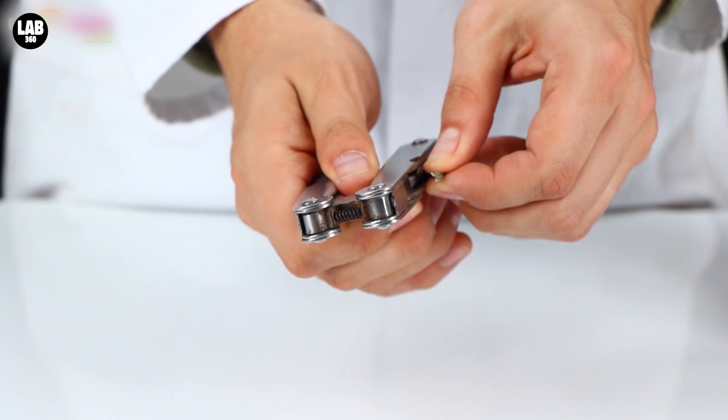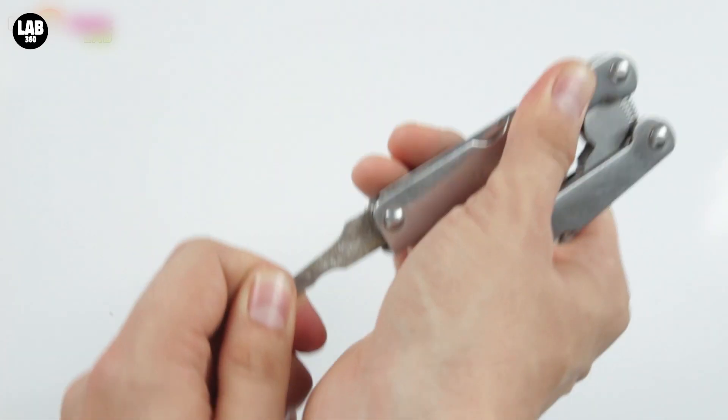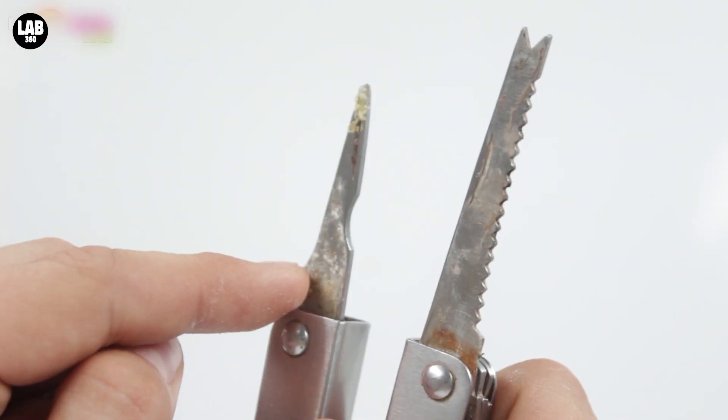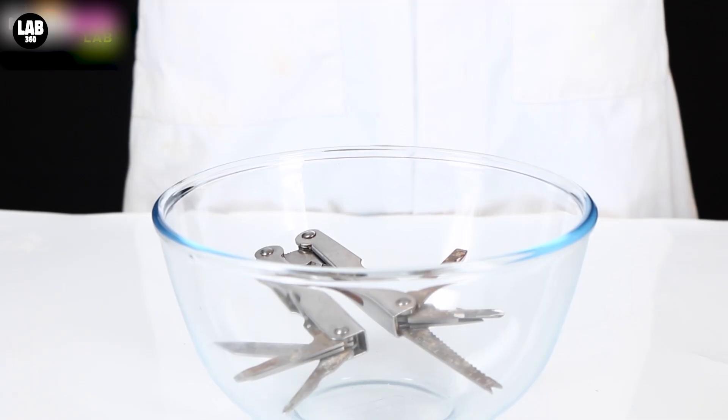In performing all these science experiments I tend to end up with some very dirty and rusty tools, but there's a very good way of cleaning them. Simply pop them inside a bowl and cover them in Coca-Cola.